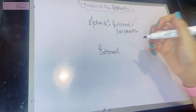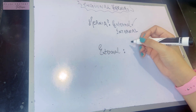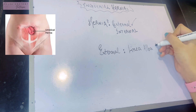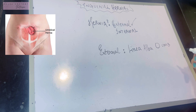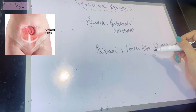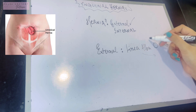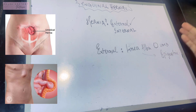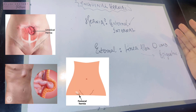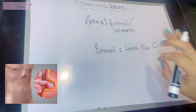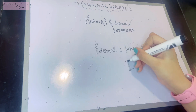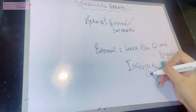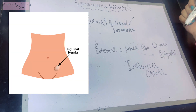In external hernias, abdominal contents can protrude through various places. If protruding through the linea alba near the umbilicus, it is a paraumbilical hernia. If protruding through the upper linea alba above the umbilicus, it is an epigastric hernia. Other types include the femoral hernia protruding through the femoral canal. Today's focus is on abdominal content protruding through the inguinal canal — these are inguinal hernias.